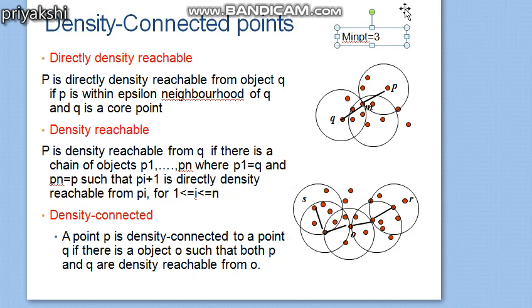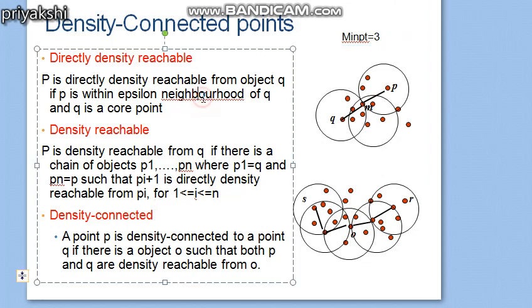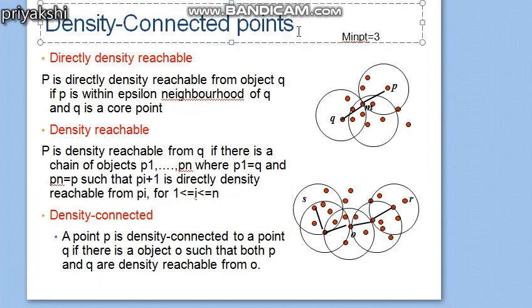Welcome to the second part of the DBSCAN algorithm. In the last video we discussed core points, noise points, and border points. Today we will discuss three concepts: density directly reachable, density reachable, and density connected. The definition of directly density reachable tells us that a point p is directly density reachable from object q if...